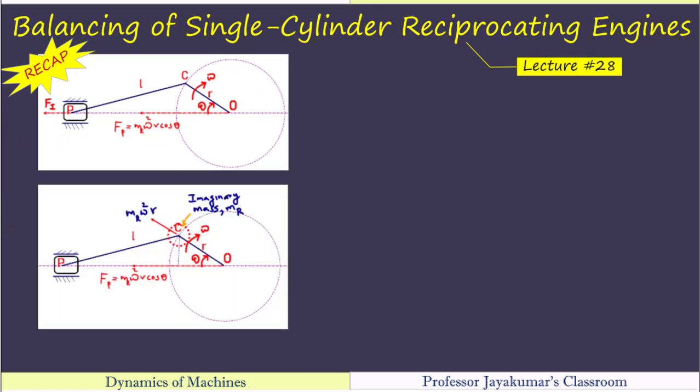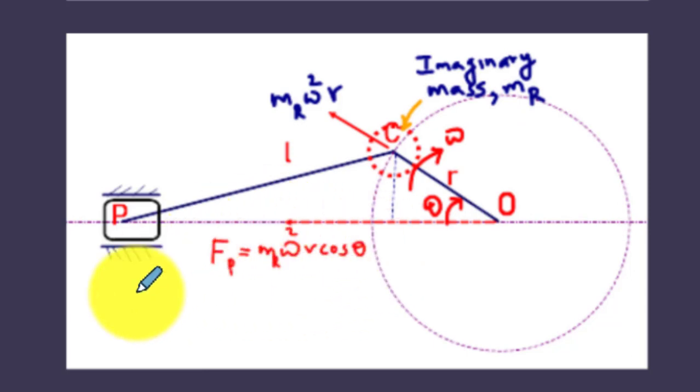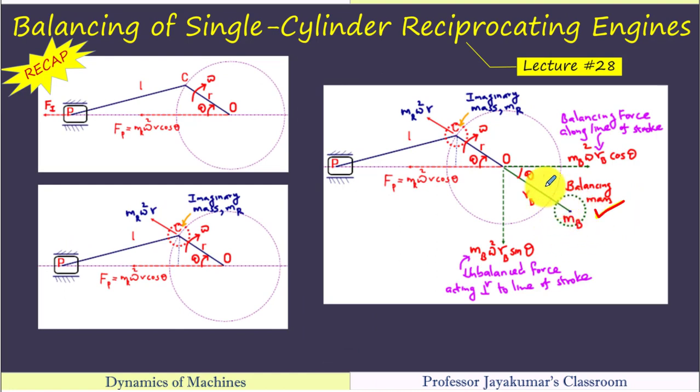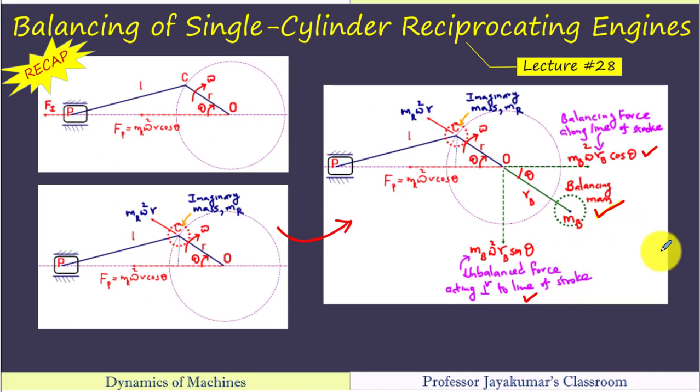In order to balance it, we have assumed that we have an imaginary mass which is placed at the crank pin which is of the magnitude equal to mass of the reciprocating parts so that it produces the actual primary unbalanced force magnitude. We have introduced balancing mass Mb in diametrically opposite direction to that of the crank. Even after the addition of balancing mass, we have learnt that still there will be some unbalanced forces exist both horizontally and vertically. So we cannot completely balance the primary unbalanced forces in a reciprocating engine.